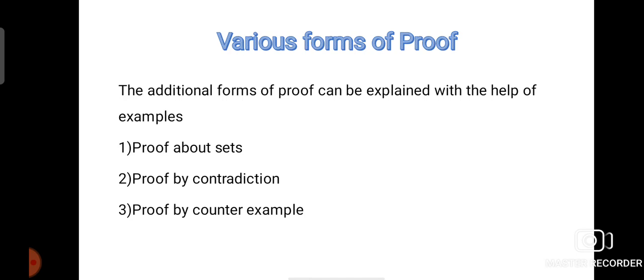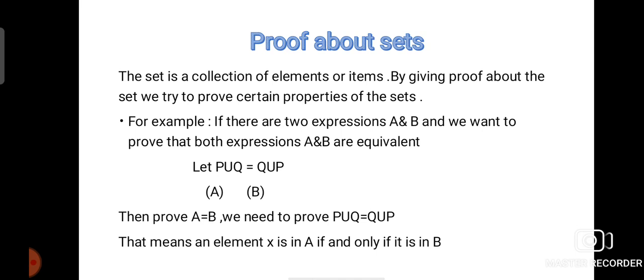We can also see various additional forms of proof. The additional forms of proof are: proof about sets, proof by contradiction, and proof by counter example. For proof about sets — a set is a collection of elements or items. To prove properties of sets, for example, if there are two expressions A and B, we want to prove they are equivalent. We will prove P∪Q = Q∪P.